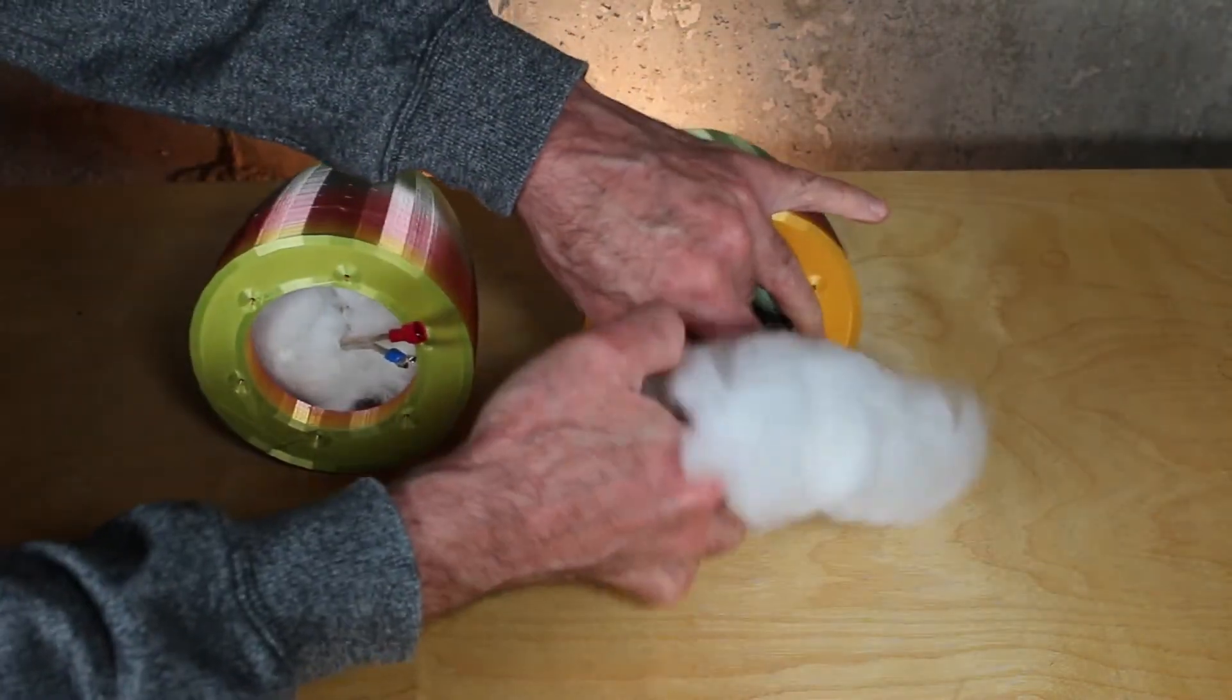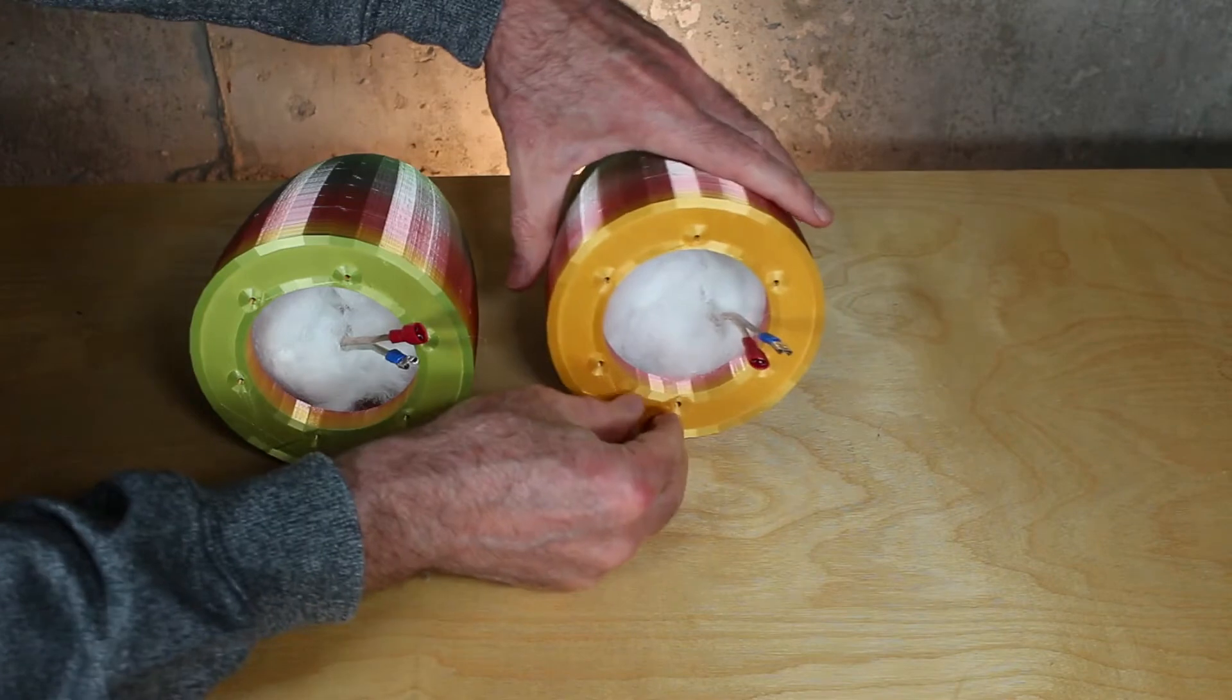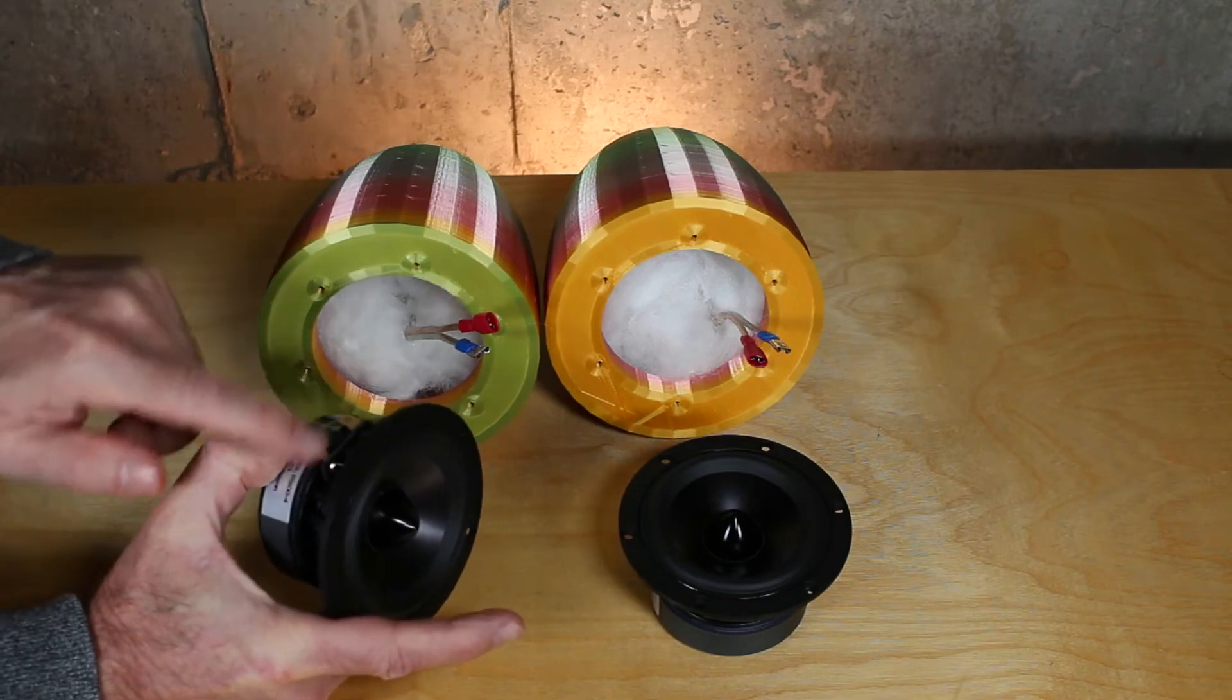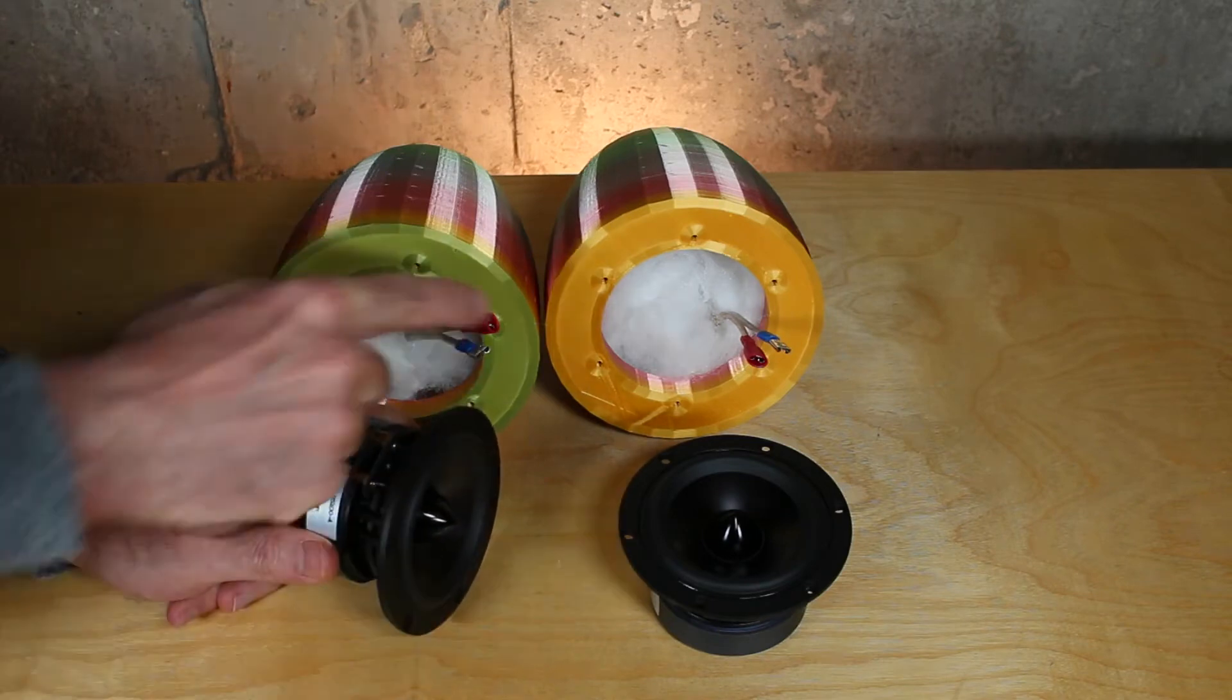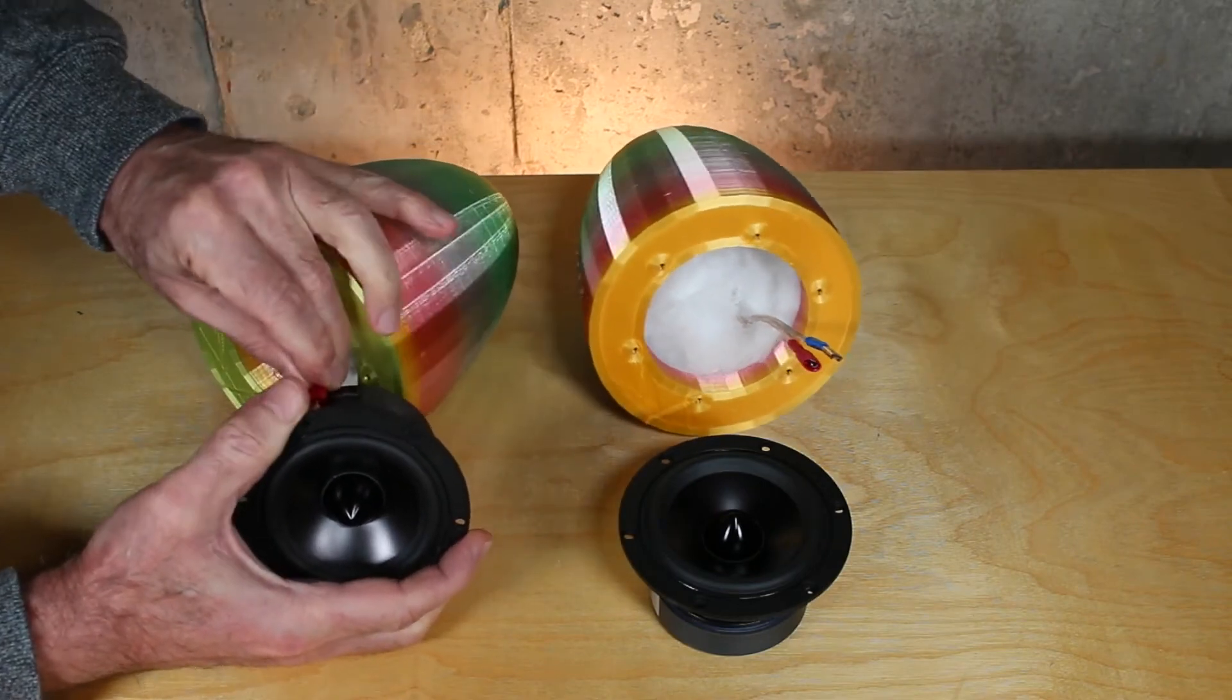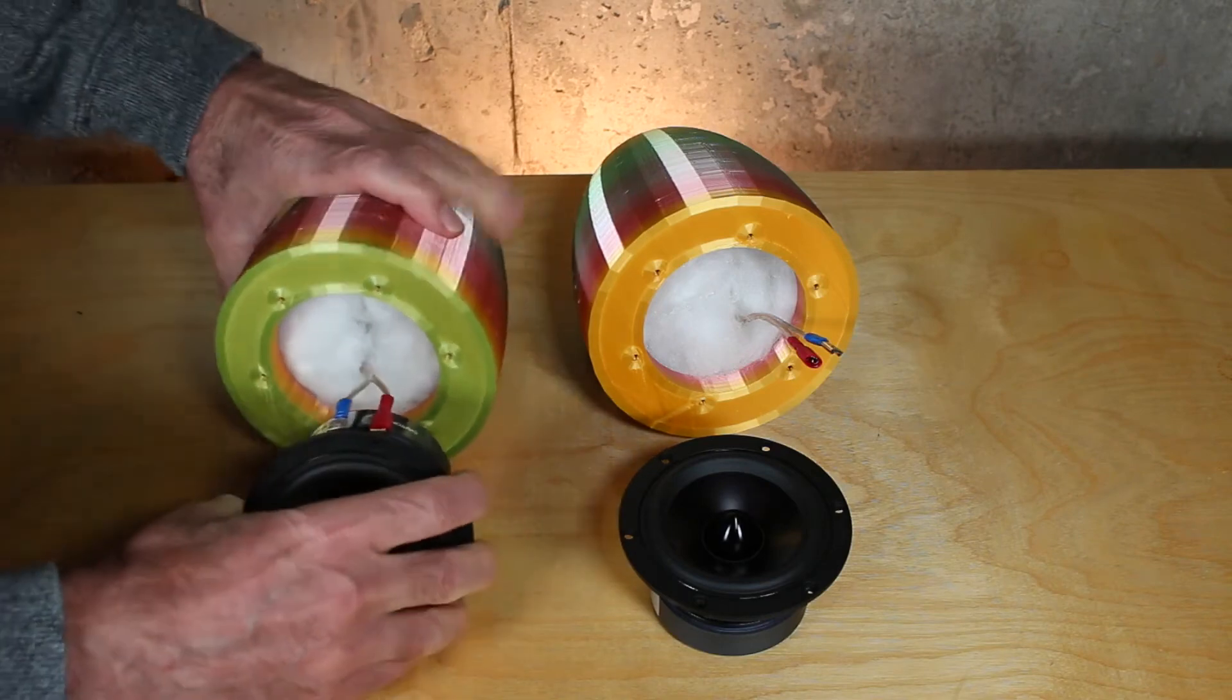So here are the two full range speakers. Notice the spade connectors on the rear. Typically on speakers the wider one is the positive and the thinner one is the negative, and they simply plug in. And so we'll give it a shot right here. So you can see they're connected.